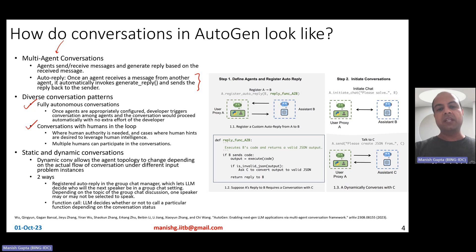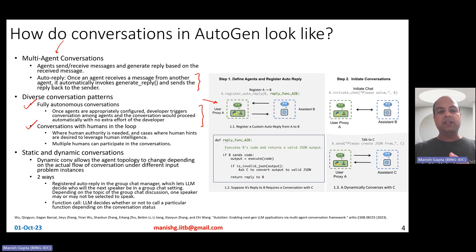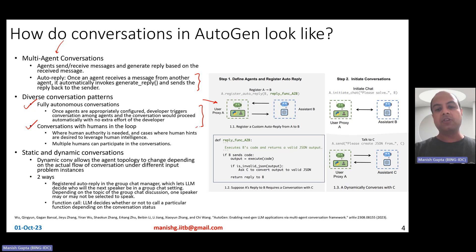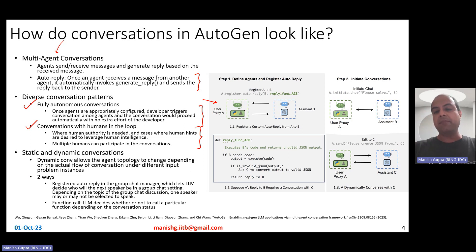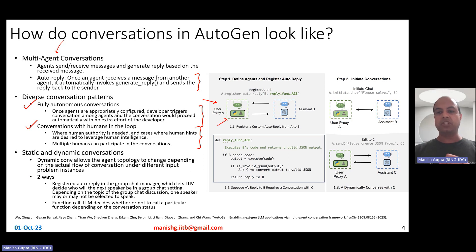Fully autonomous conversations mean that once agents are configured and connected in a topology, the developer writes triggers for conversation, and then the conversation proceeds automatically with no human involvement. On the other hand, there could be conversations with human in the loop, where human authority is needed or human hints are desired to leverage human intelligence — for example, complicated math problems. Multiple humans can also participate; the system is configurable to have multiple user proxy agents.